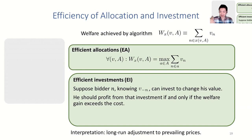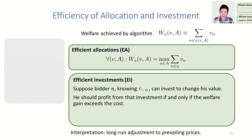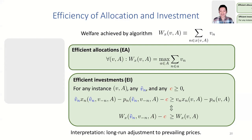Think of this like a long-run adjustment to prevailing prices: you're a power station participating in electricity auctions, deciding each morning how much to ramp up your thermal generator, which determines your cost of provision in the afternoon. We're taking a best-case scenario — imagining you knew exactly what those prices are. We'd at least like it to be that your investment decision is efficient when you know the prices. In math: for any instance, any change V̄_N in bidder N's value, and any cost C, bidder N's utility under the mechanism rises from making the investment if and only if the welfare net of investment cost rises.